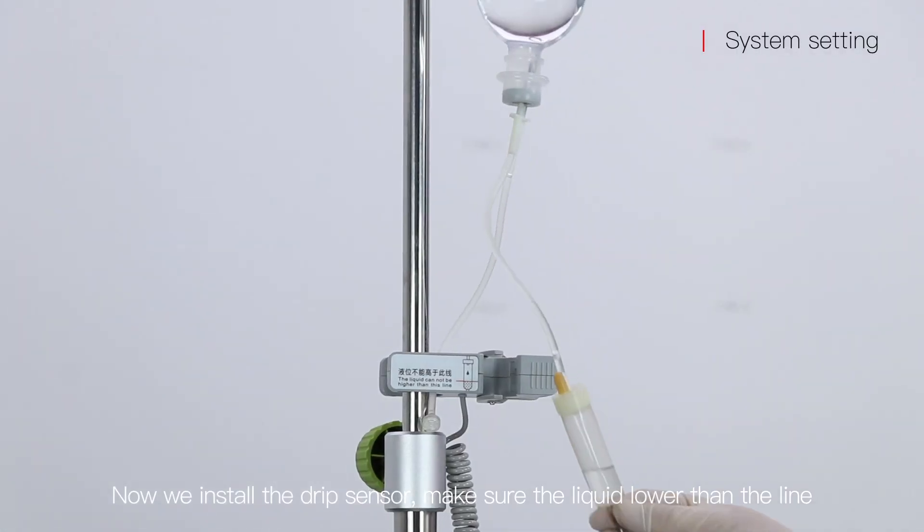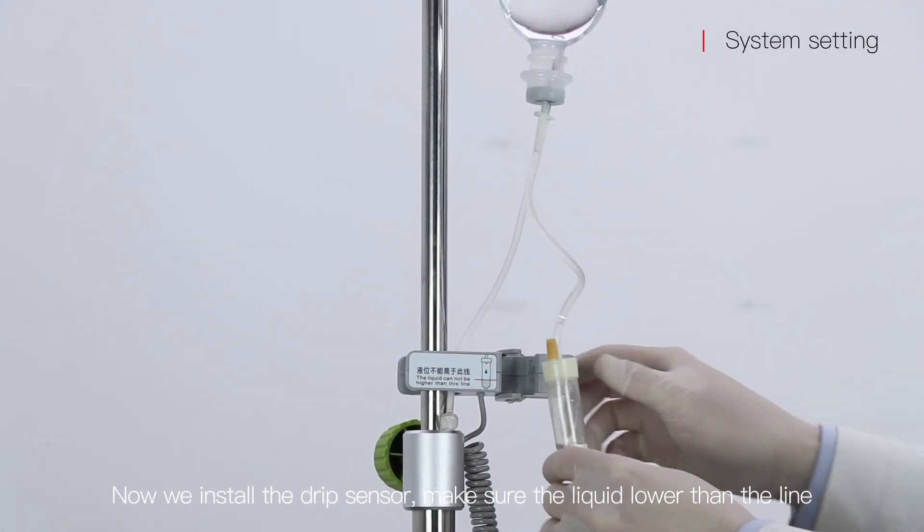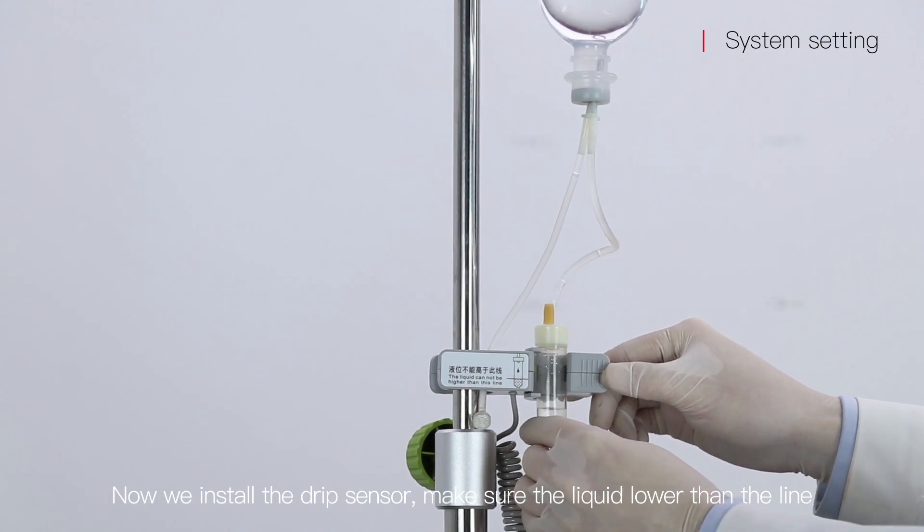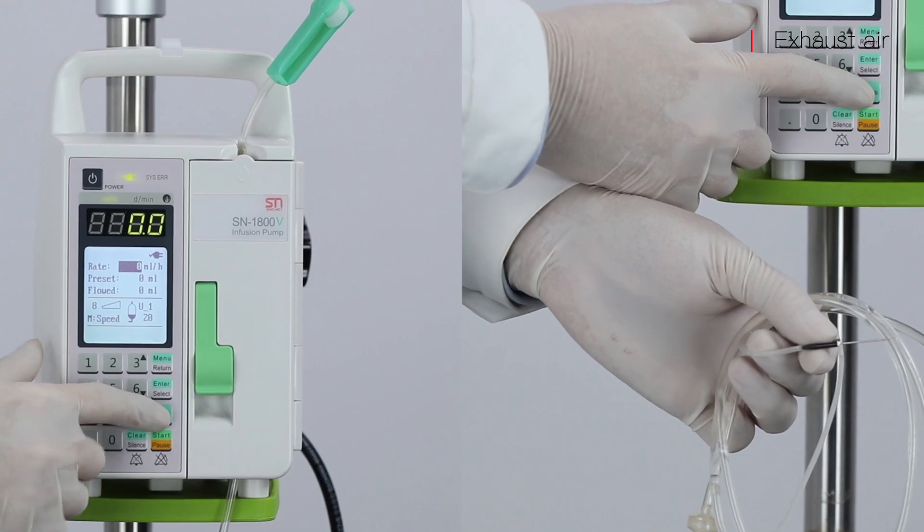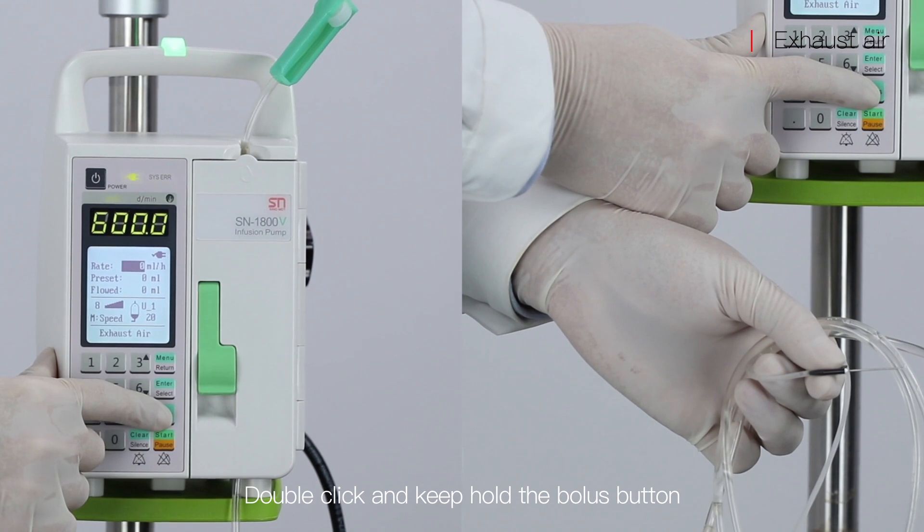Now we install the drip sensor, make sure the liquid is lower than the line. Double click and keep holding the bolus button.